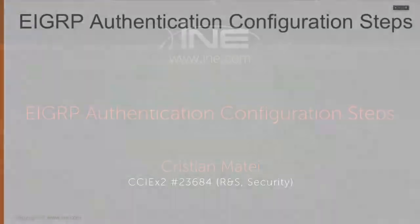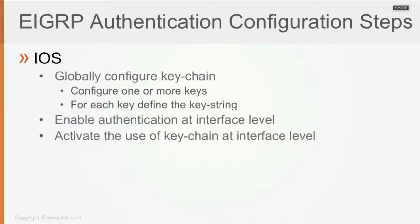So we're going to do the EIGRP identification, and from the EIGRP point of view, on the iOS side, the steps are going to be to globally configure the keychain. Within the keychain, which is a chain of keys, you can define one or more keys, each key with its own validity interval. For each key, you're going to define what the key string is, because the key string and the key number are going to be used to compute the MD5 hash, which is going to be attached to the EIGRP packet.